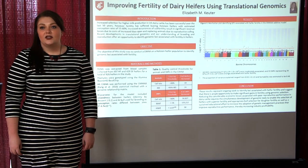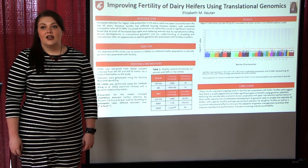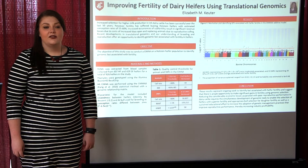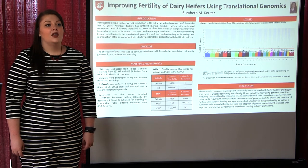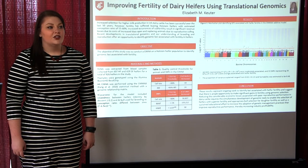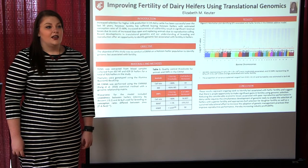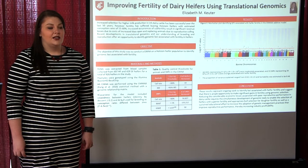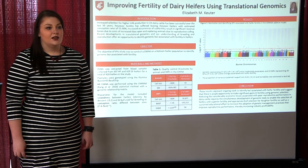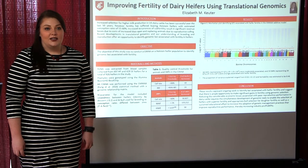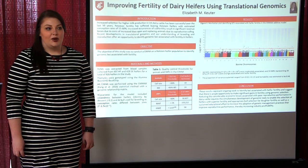The U.S. dairy industry is comprised of over nine million cows and four million heifers, and while selection for milk production has been wildly successful, the producers have seen a decrease in conception rates, which is the ratio of animals pregnant to animals bred.